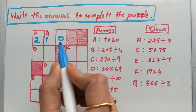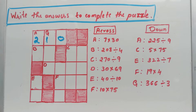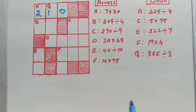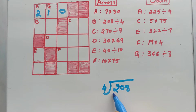Across B is 208 divided by 4. In the last video we learned division, so let's do division. 208 divided by 4 — you need the 4 times table. If you take only the first digit, 2 is less than 4, so you can't divide 2 by 4. You have to take the next number also: 20.